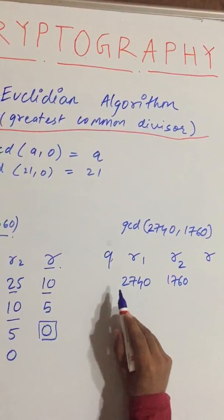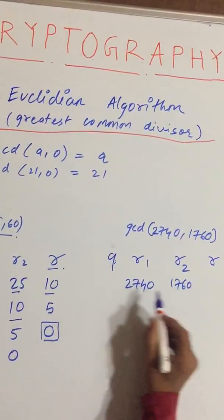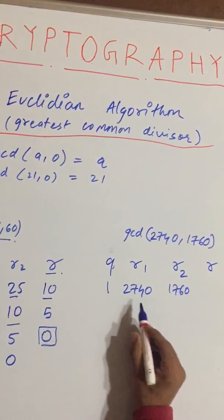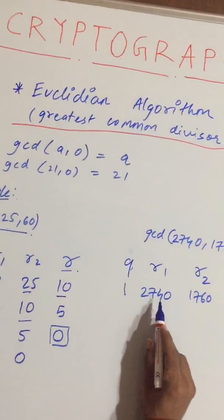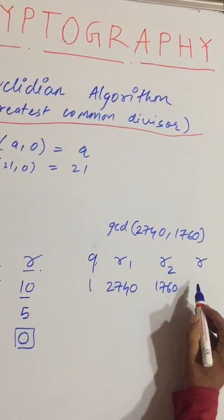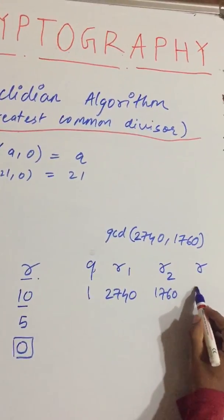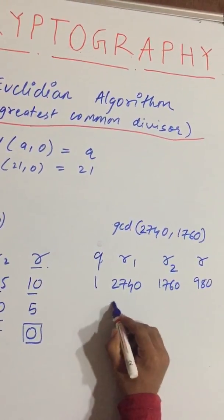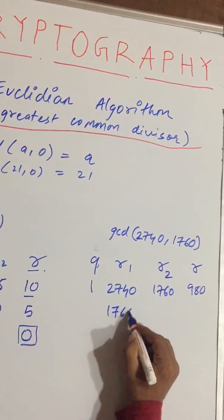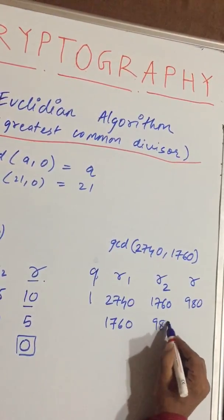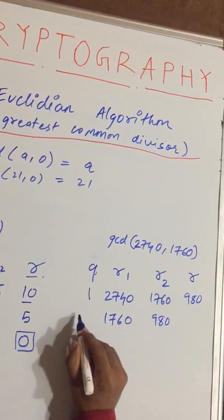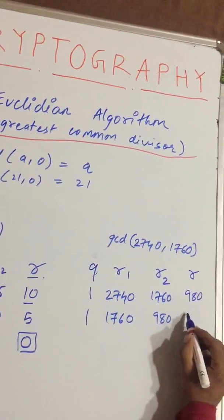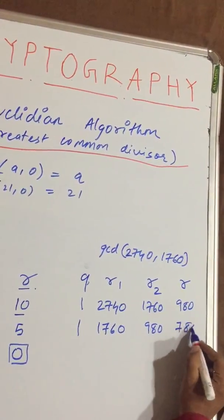Now we do the same calculation. 1760 multiplied by 1, then subtract: 2740 minus 1760 equals 980. Shift both terms — R1 becomes 1760 and R2 becomes 980. The quotient is again 1, and the remainder will be 780.